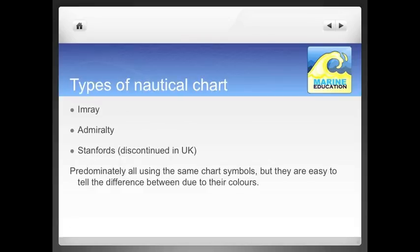There are two types of charts available on the market in the UK at the moment: Imray and Admiralty. Stamford's used to exist but it's been discontinued in the UK. The charts are predominantly the same, using the same chart symbols, but they do vary in colour quite dramatically. We'll look at this during the tutorial.